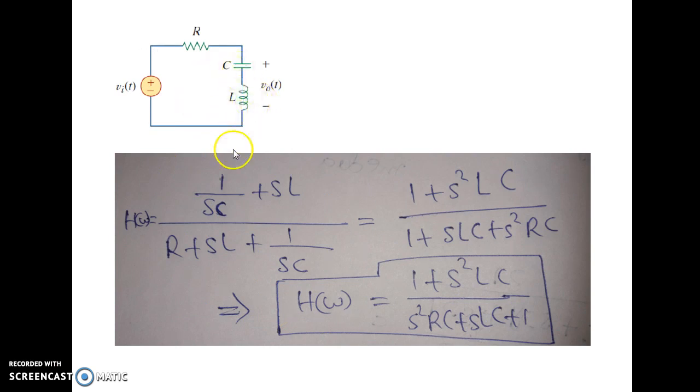See, this is the circuit. If we calculate the transfer function, we have to simply apply voltage divider rule and some transformation we have to do before analyzing the circuit, because the capacitor in S domain will be converted into 1 by SC, the inductor will be converted into SL. So, what will be the voltage after voltage divider rule application?